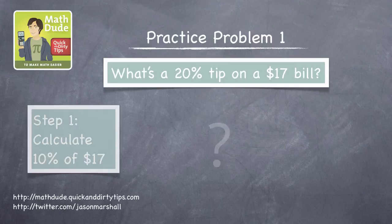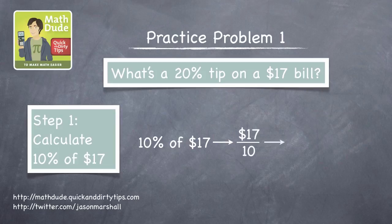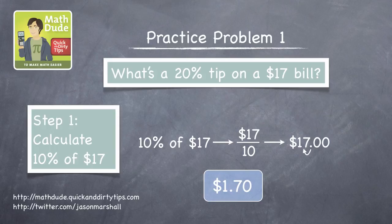The first step is to find 10% of $17. So we divide $17 by 10, moving the decimal point one digit to the left, and we find that 10% is $1.70.